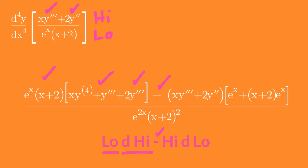Continue with minus high — copy the numerator here. Then d low: differentiate the denominator.